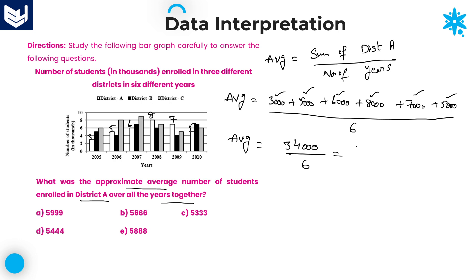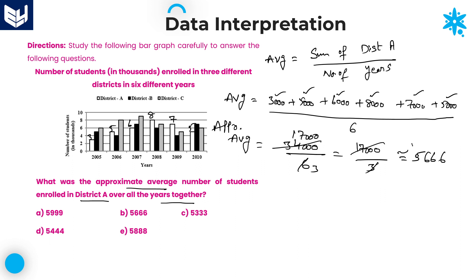Simplifying 34,000 ÷ 6: cancel with the 2 table to get 17,000 ÷ 3. This does not divide evenly, so we calculate the approximate value. 17,000 ÷ 3 ≈ 5,666. The approximate average is 5,666. Option B is the right answer.